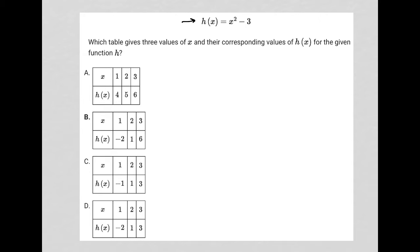So this question begins by providing this function h of x equals x squared minus 3. The question goes on to say which table gives three values of x and their corresponding values of h of x for the given function h.